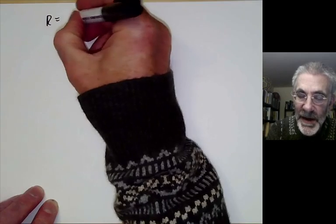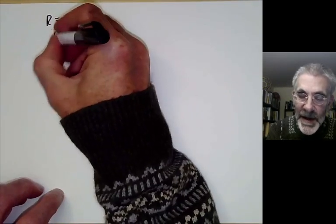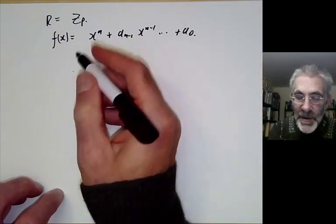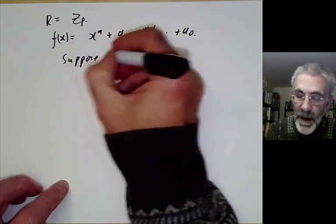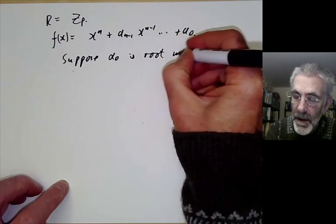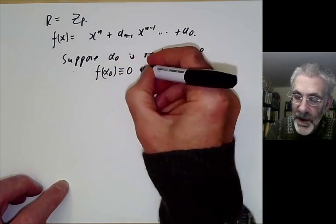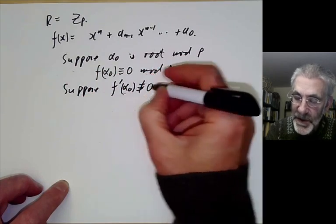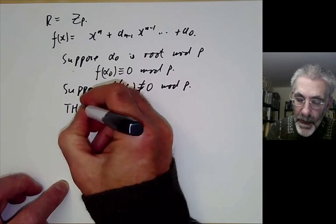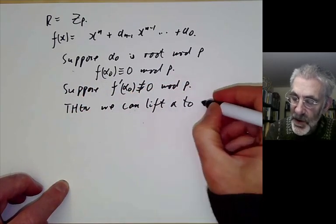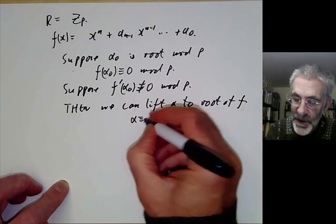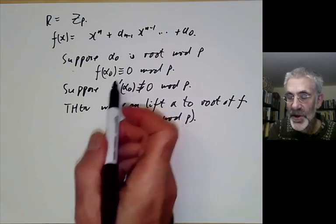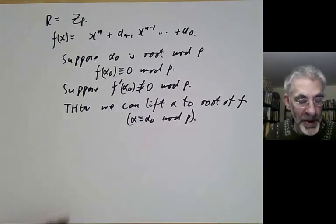We take our ring r to be just the p-adic integers, and our problem is: given f(x) = x^n + a_{n-1}x^{n-1} + ... + a_0, find roots of f. Suppose alpha_0 is a root mod p, so f(alpha_0) ≡ 0 mod p, and suppose that f'(alpha_0) ≢ 0 mod p. Then we can lift alpha to a root of f with alpha ≡ alpha_0 mod p. An approximate root can be lifted to an exact root, provided this condition about the derivative of f holds.